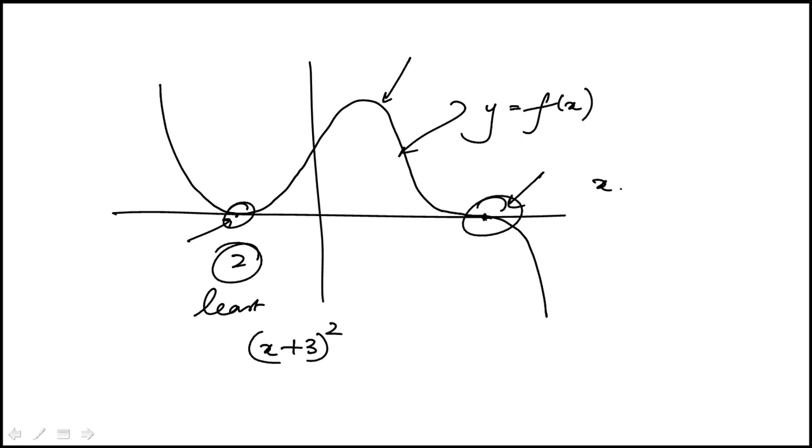Actually, they give you the marks here. So it should be x minus 3. In the least, this would be odd. Multiplicity is 3.